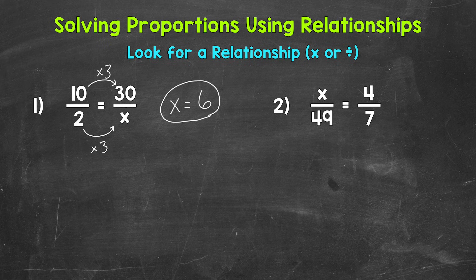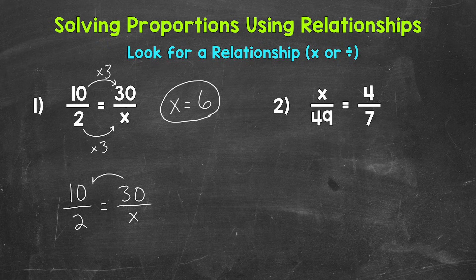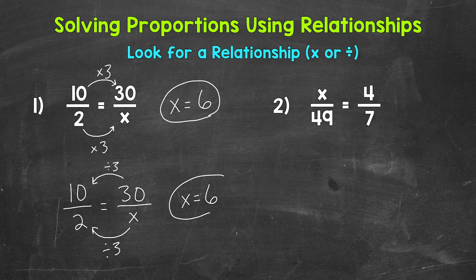Now we can also go the other way and use division, so you can go either way when looking for that relationship. So let me rewrite the ratios down below: 10 to 2 equals 30 to x. You may have noticed that 30 divided by 3 equals 10. So we can think: what divided by 3 equals 2? Well, 6. So x equals 6 that way as well.